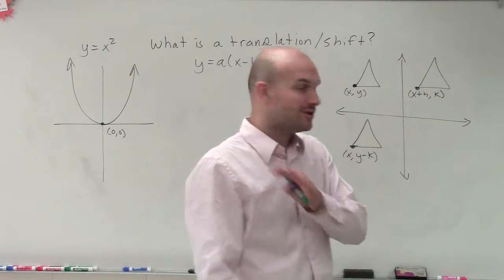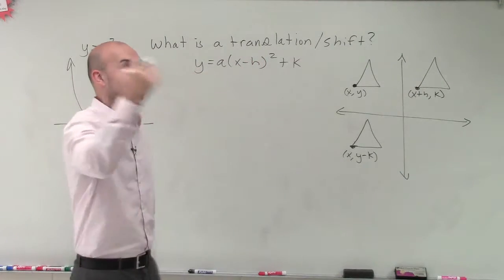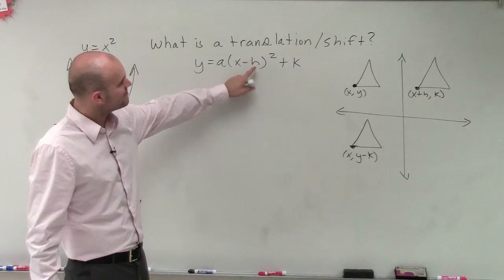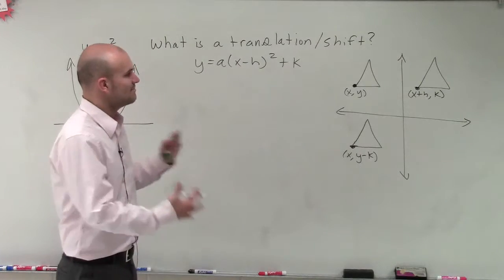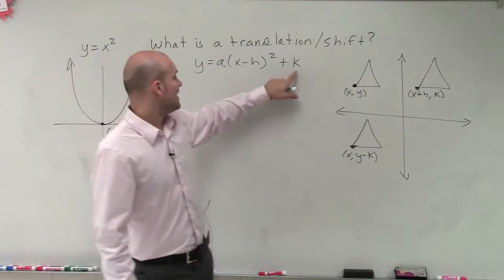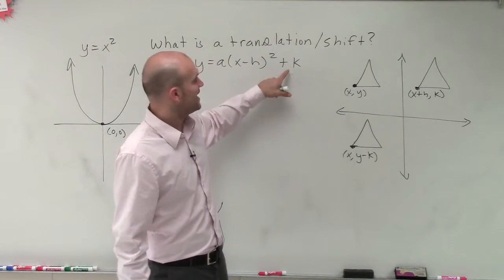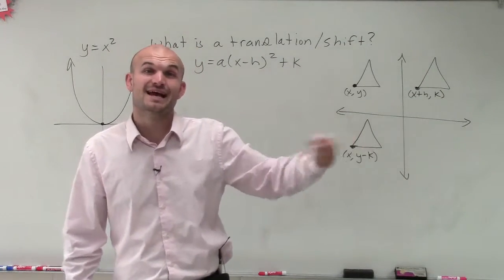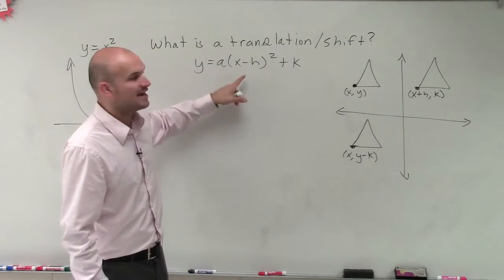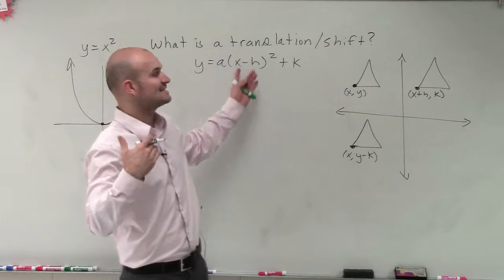One thing I really want you to be aware of: this says x minus h — x opposite of h. So when looking at our values, h is going to be positive, but it's the minus of h. When I say shift left or right, it's going to be in the opposite direction. And then k would be plus or minus — if I'm going to shift down, that means k is negative. So if I have something like x plus 5, I'm actually shifting in the negative direction because it's x opposite of h.